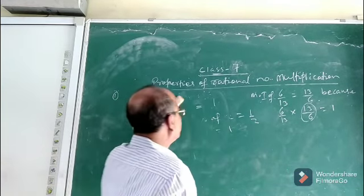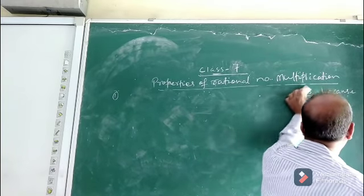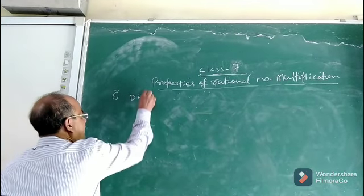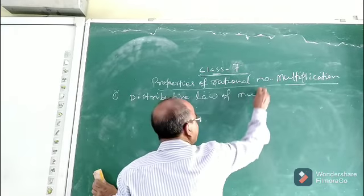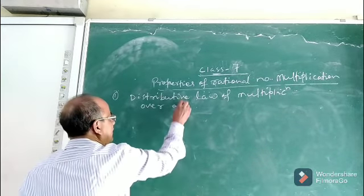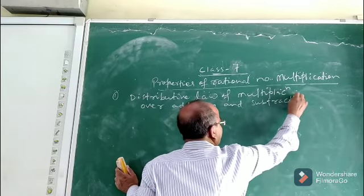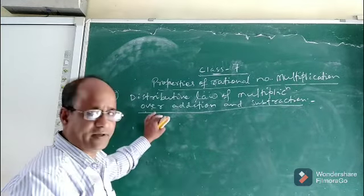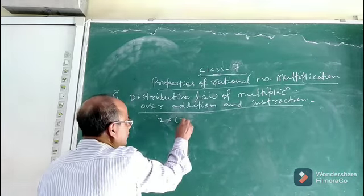Now we will discuss some more properties. This is the distributive law, which you have read in class 6 in the chapter on whole numbers. This is the last property — distributive law of multiplication over addition and subtraction. What is distributive law? Suppose you are given to multiply 2 into 3 plus 5.